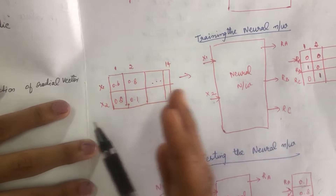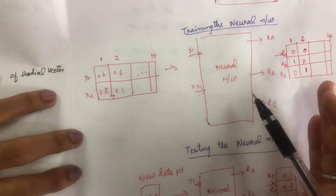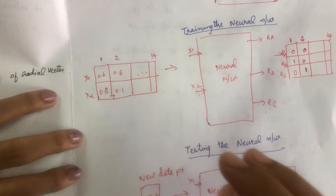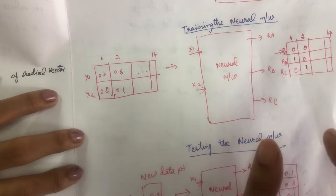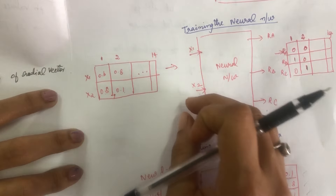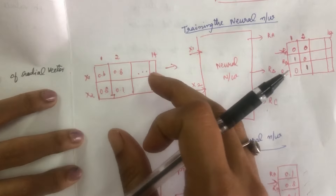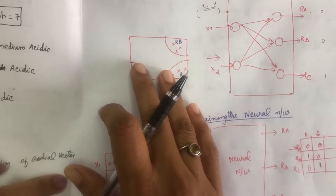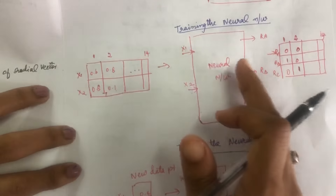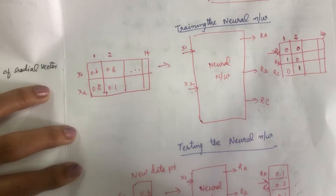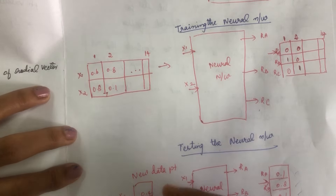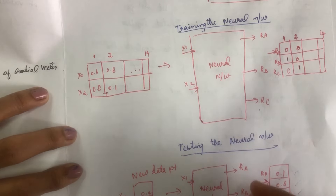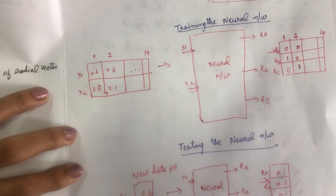In summary for neural networks: first, train the network with all available data points and their known classifications. Once training is complete, test with new data sets — the network compares them with the existing database and gives approximate output values, which are the fuzzy membership values.